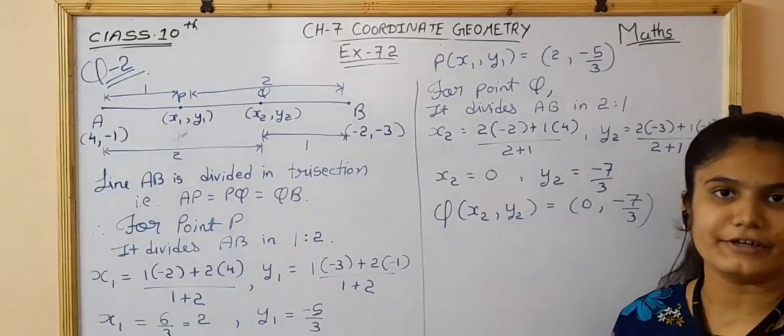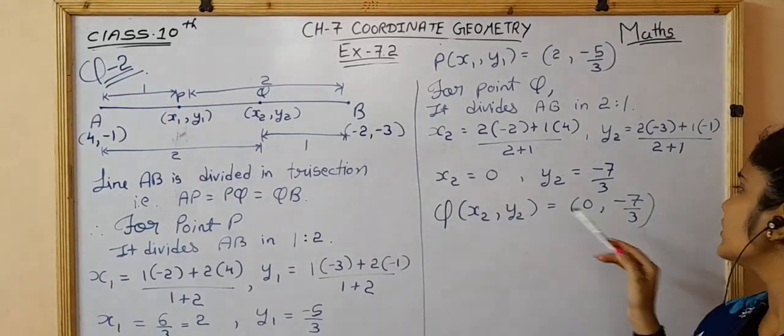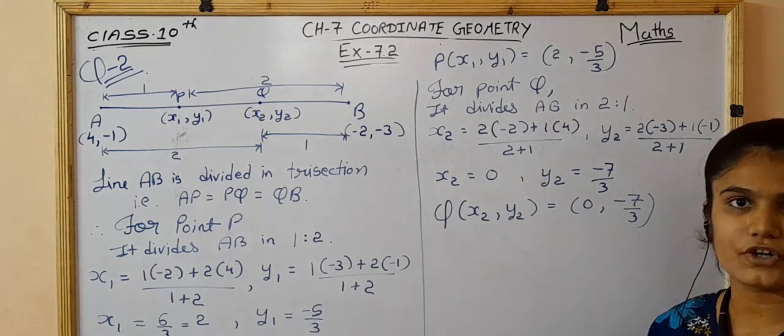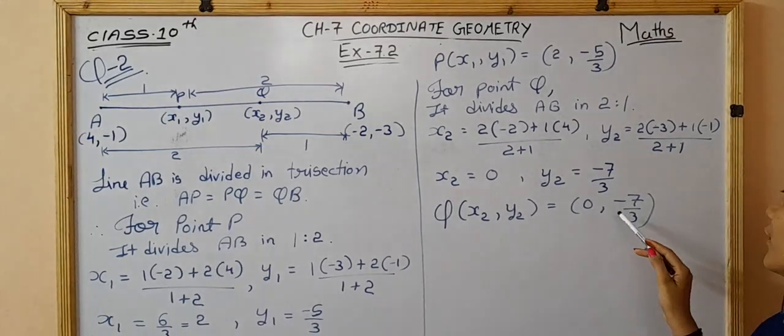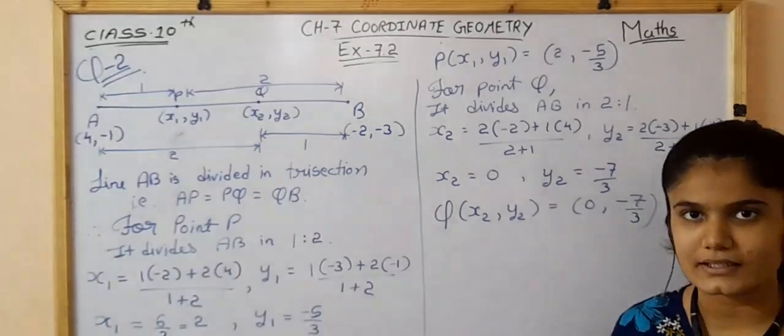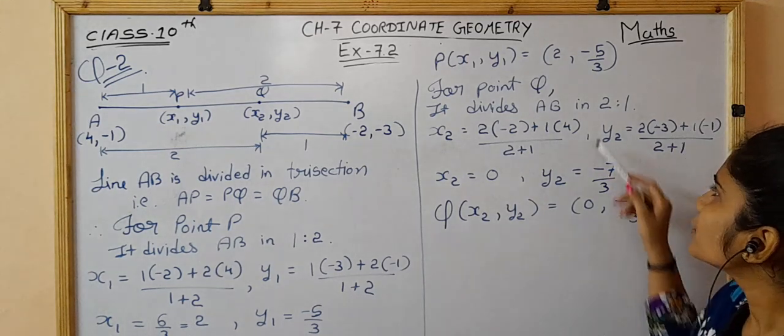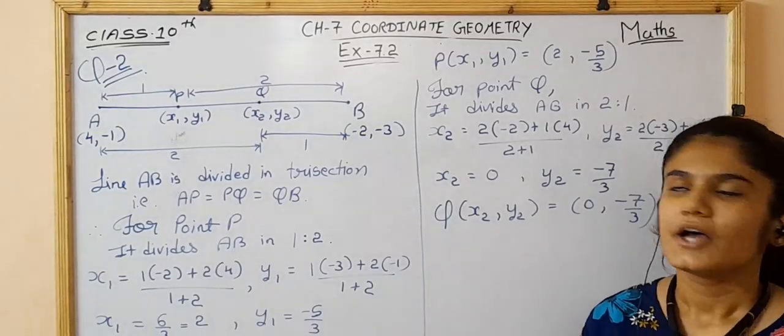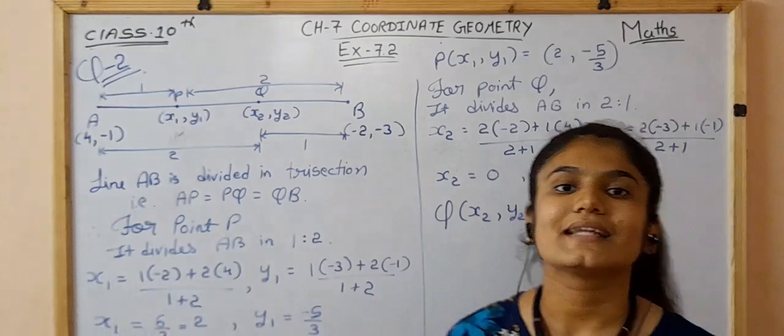For point Q dividing in ratio 2:1, using the section formula, the coordinates of Q (x2, y2) come out to be (0, -7/3). So these are the two points and coordinates which divide the line AB in trisection.